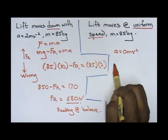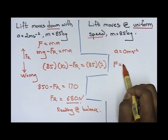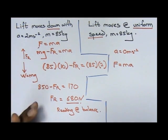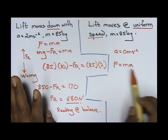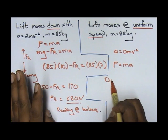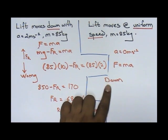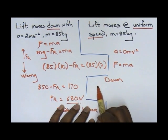That means if I'm using my formula F equals to ma, it doesn't matter if the lift is moving down or up, the concept is the same. Let's say in this case the lift is moving down. Remember, if the lift is moving down, you will take mg minus FR equals to ma.